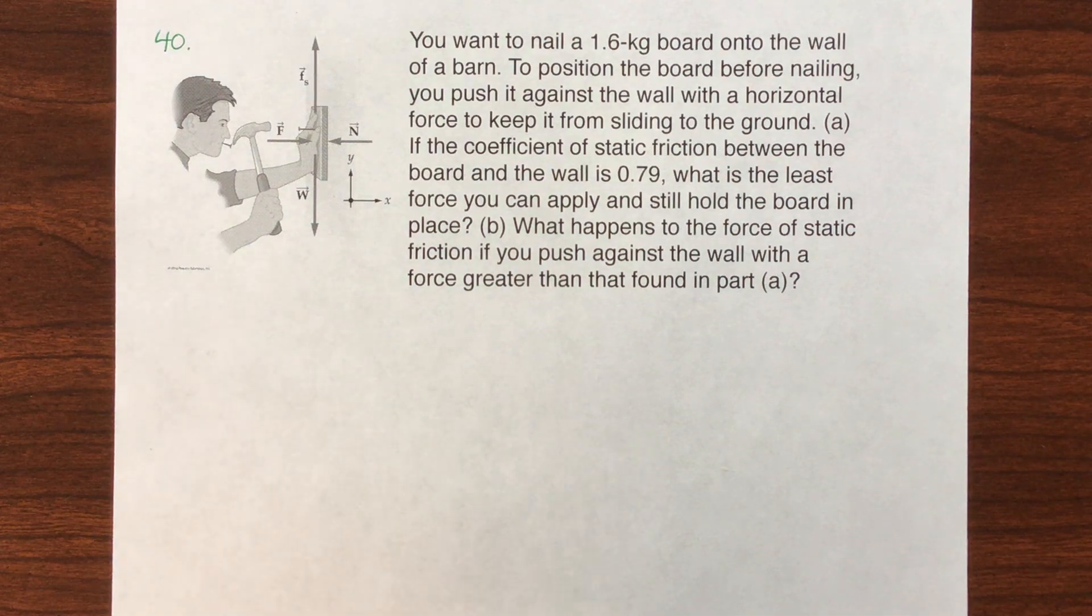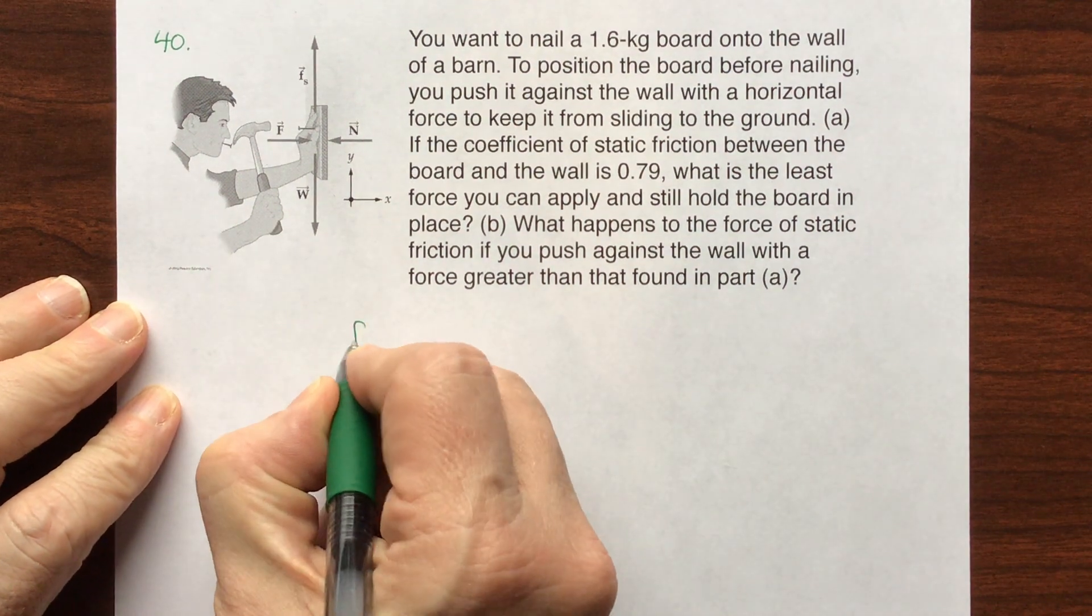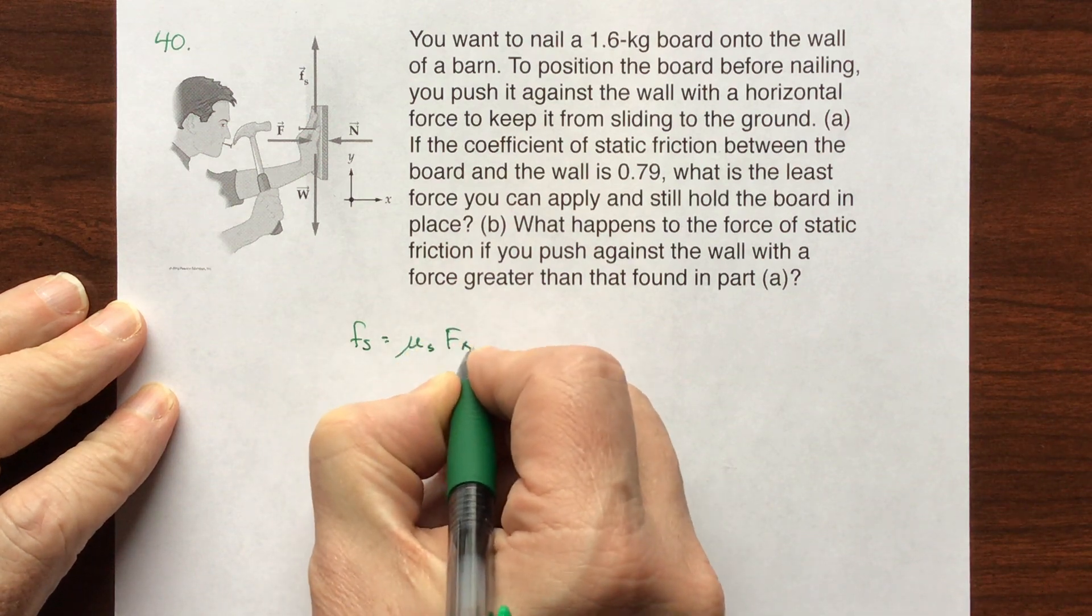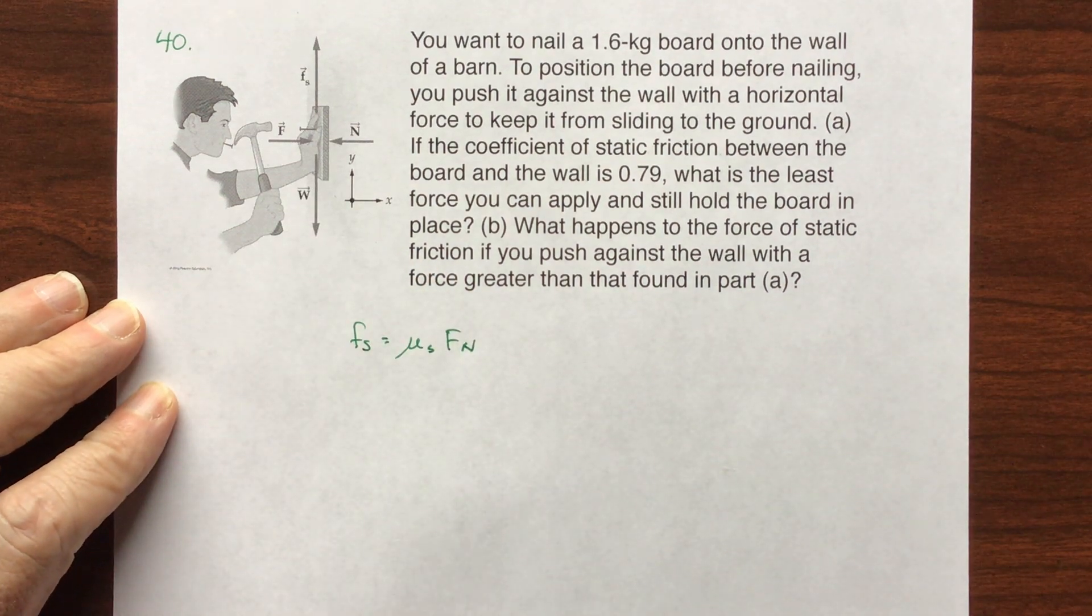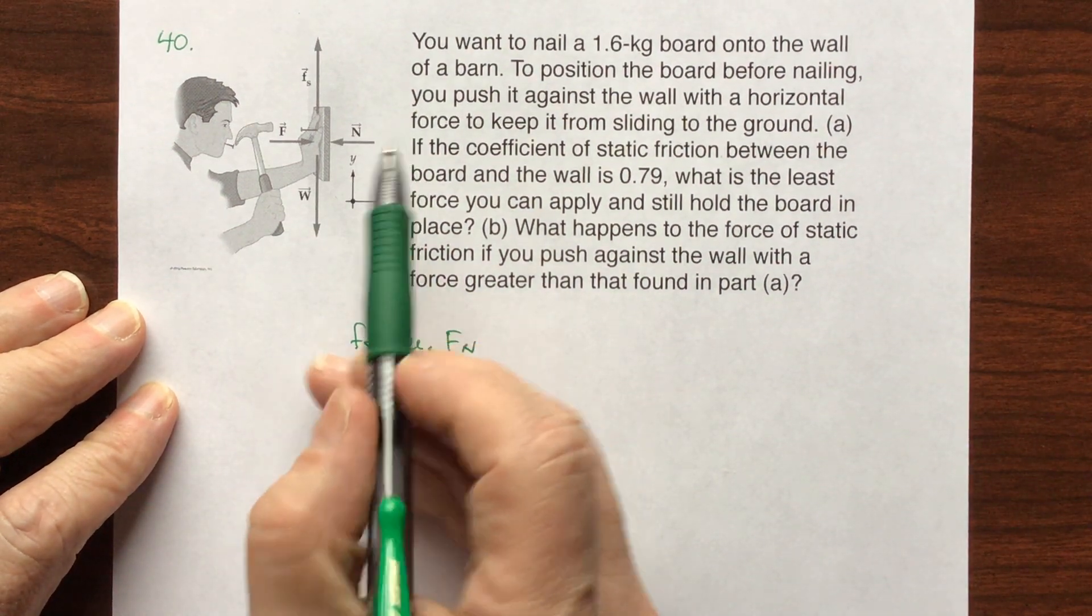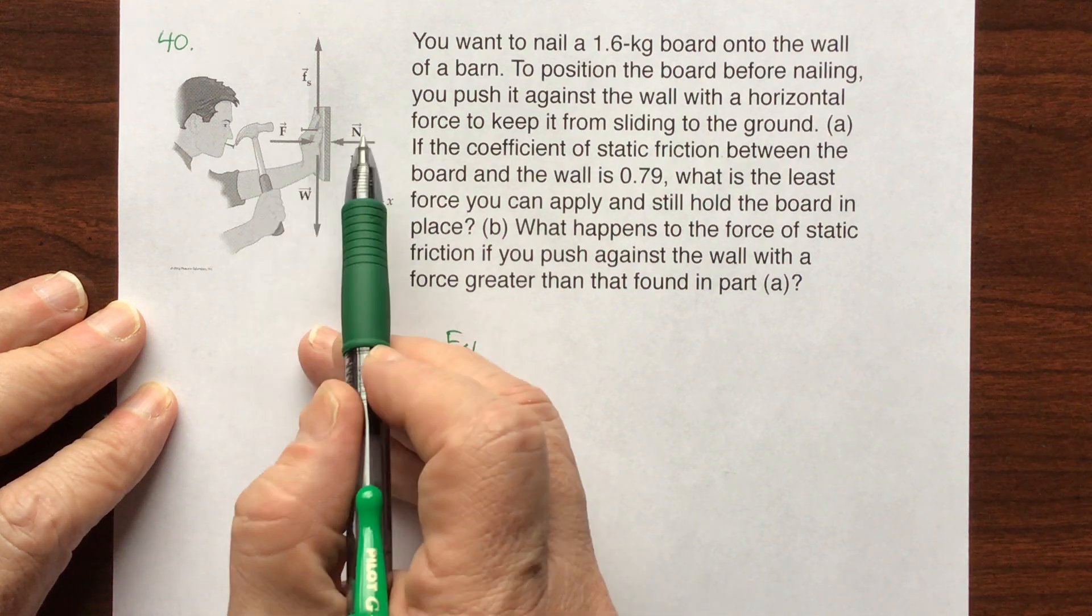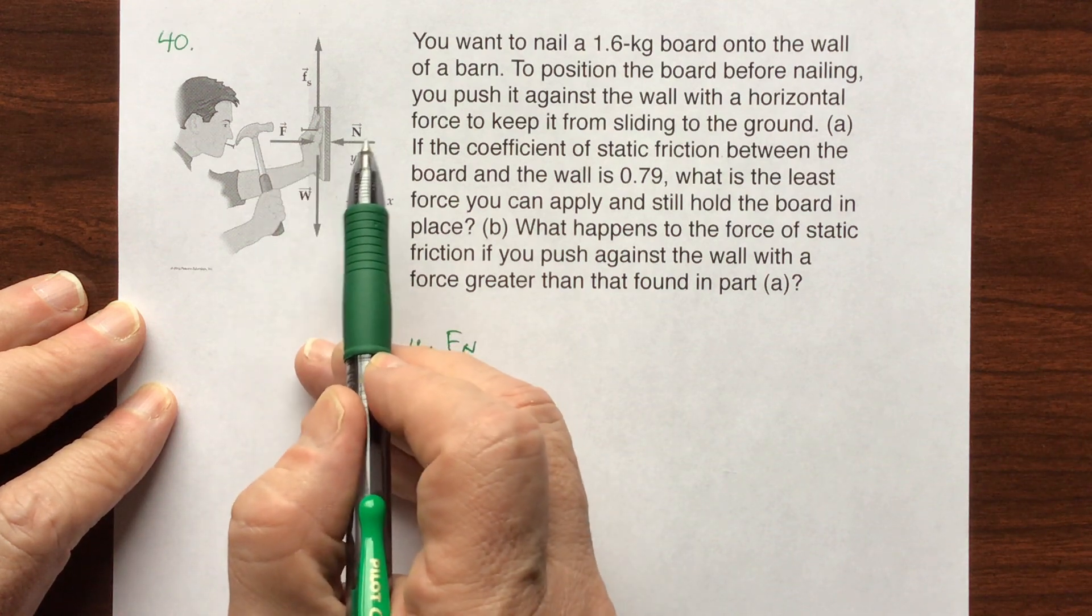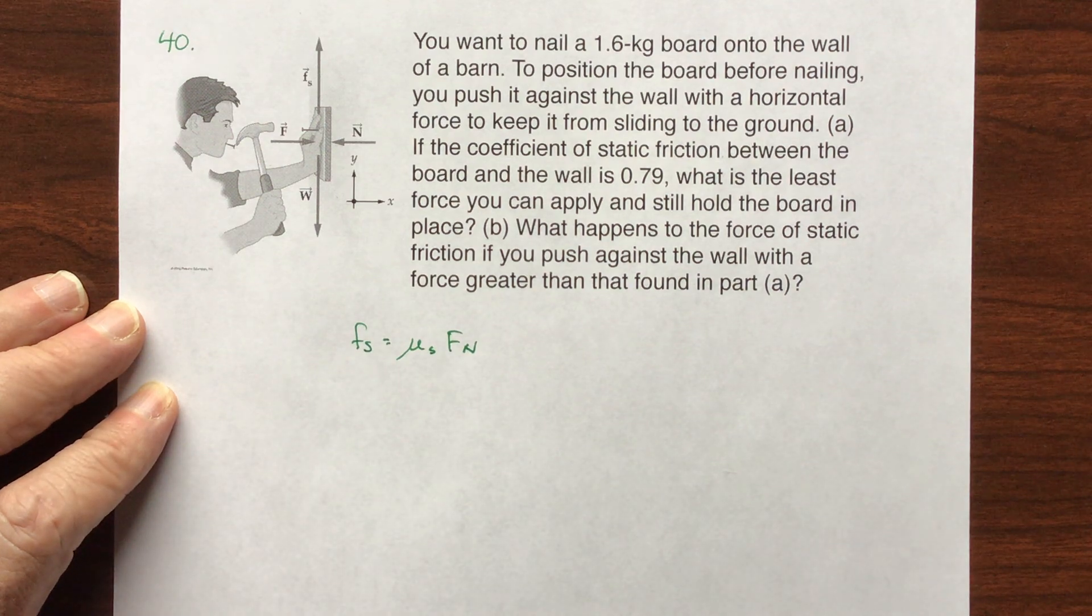Static friction is the coefficient of static friction times the normal force. The normal force is the force that the barn is exerting on that wall. So as soon as I can find the normal force, this board is not moving, so it's in equilibrium. That force is equal to the force I'm pushing.